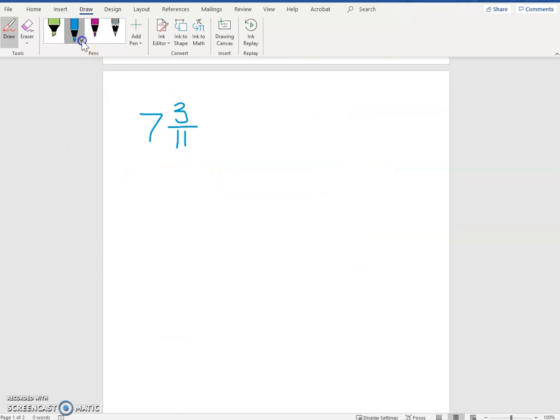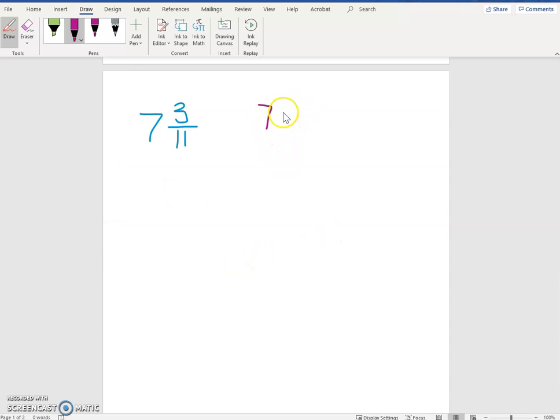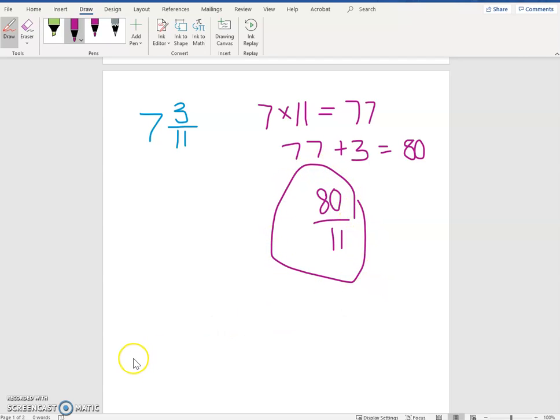Let's see those steps with a slightly larger number. Again, I'm going to take the whole number 7 and multiply it by the denominator 11. 7 times 11 is 77. That gets added to the original numerator, so 77 plus the 3 I already had is 80. And notice our denominator does not change. So 11 is the original denominator, it is still the denominator here. So 7 and 3 elevenths becomes 80 elevenths as an improper fraction.